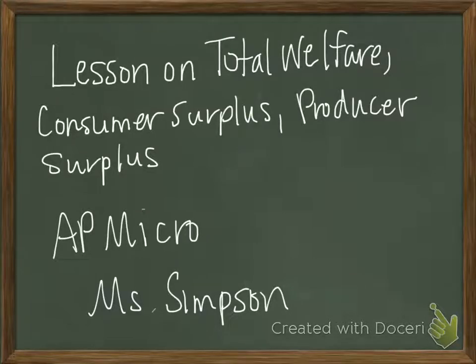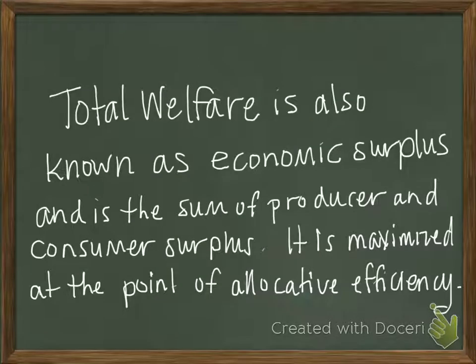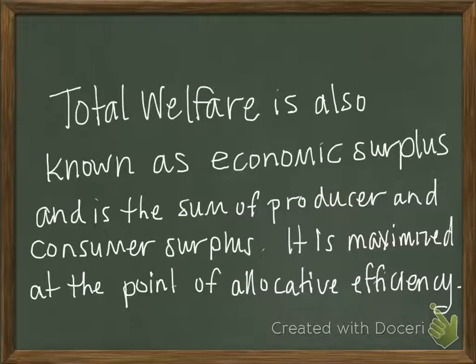This is a lesson on total welfare, consumer surplus, and producer surplus. I'm Ms. Simpson, and I'm recording this for my AP Microeconomics classes. Total welfare is known as the economic surplus, and it is the sum of producer and consumer surplus. Total welfare is maximized at the point of allocative efficiency.